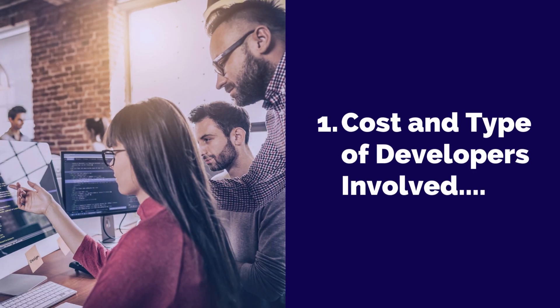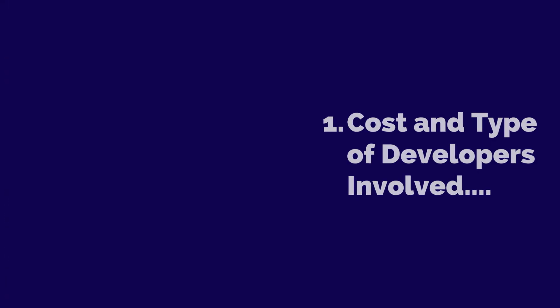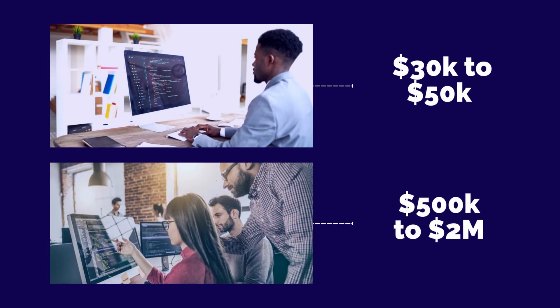The first factor that influences a DApp budget is the method in which you choose to build it and the type of developers involved. You could choose to hire freelance developers, employ an agency, or use in-house engineers. Whatever method you choose, there are costs attached. Hiring a freelance developer to build a DApp usually costs between $30,000 to $50,000, depending on the expertise of the engineer. Hiring an agency or having an in-house team could cost between $500,000 to $2 million, depending on the nature and use case of the DApp.